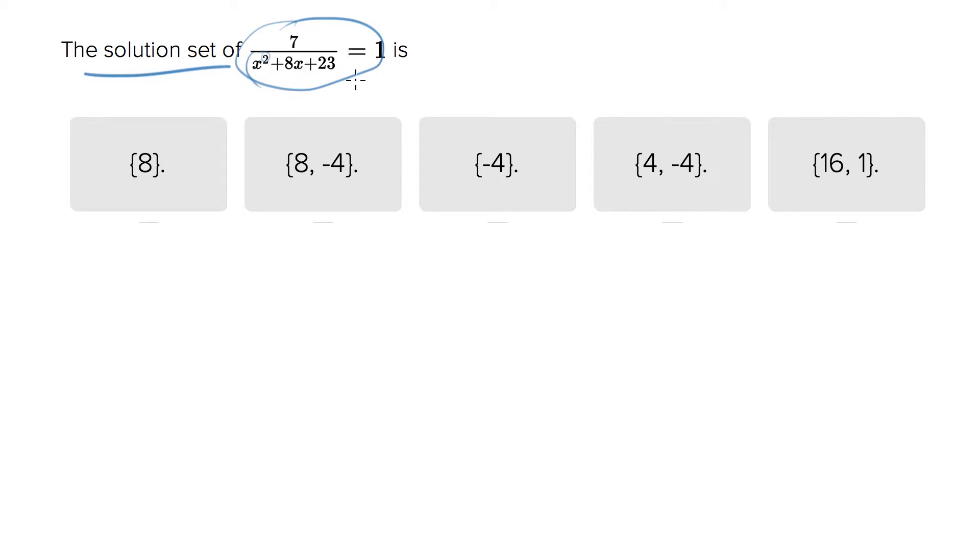Let's multiply both sides by that denominator there, and what you end up with is 7 equals x squared plus 8x plus 23.